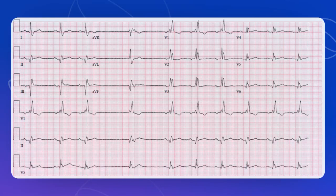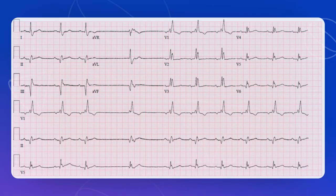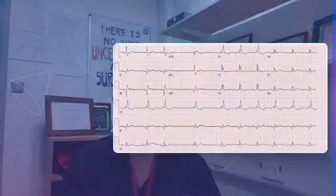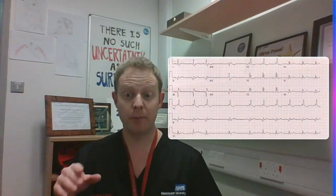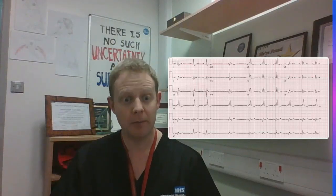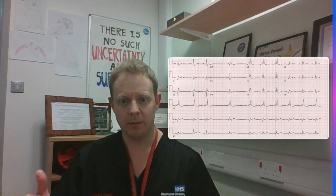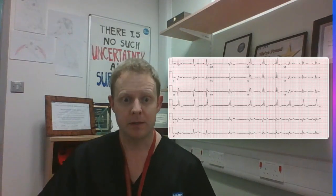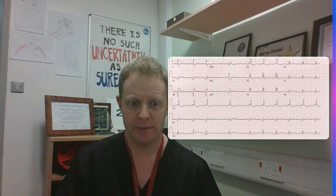Now let's look at the PR interval — it's prolonged, over 200 milliseconds, over one big square. So this is trifascicular block. It's a famous misnomer because trifascicular block doesn't mean you've blocked three fascicles — if you block all three fascicles you've got complete heart block. What it actually means is you've got AV block as well as two fascicles blocked, which is exactly what we've got here.